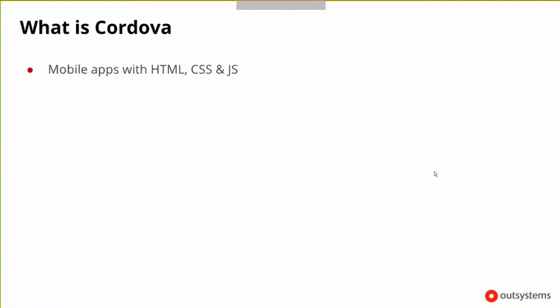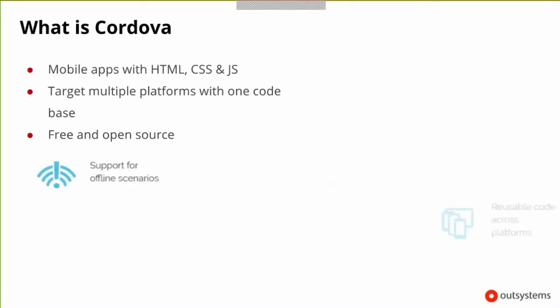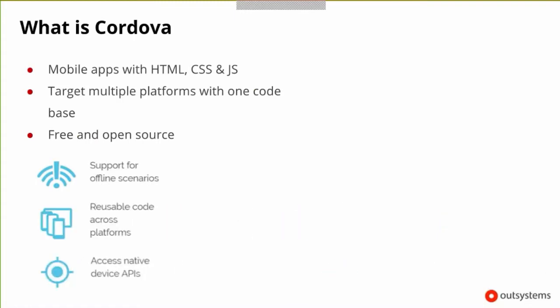What is Cordova? Cordova allows you to build HTML, CSS, and JavaScript into a mobile app — a hybrid application — and this fits like a glove into what OutSystems produces as page outputs. It targets multiple platforms with one code base, it's free and open source, and supports offline scenarios, reusable code across platforms, and access to native device APIs, which is what we want to explore here.